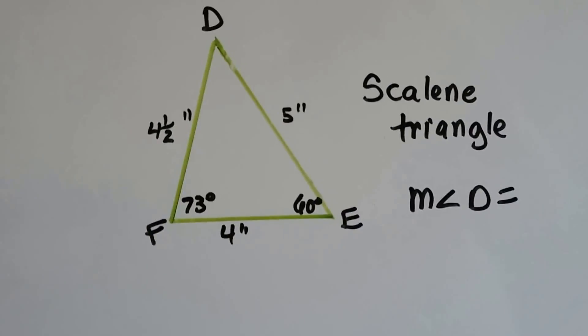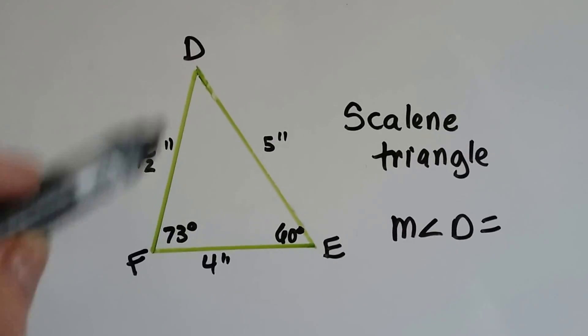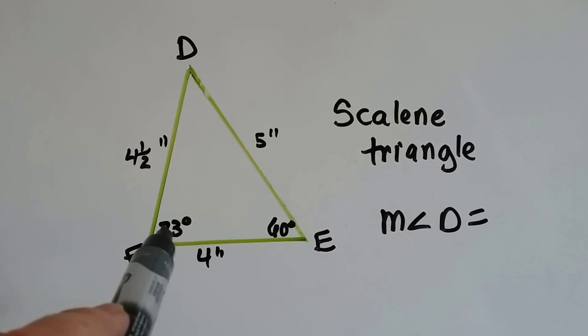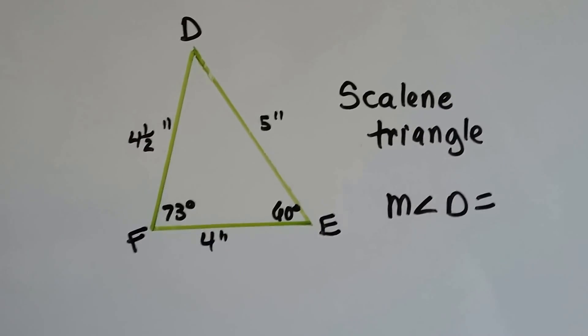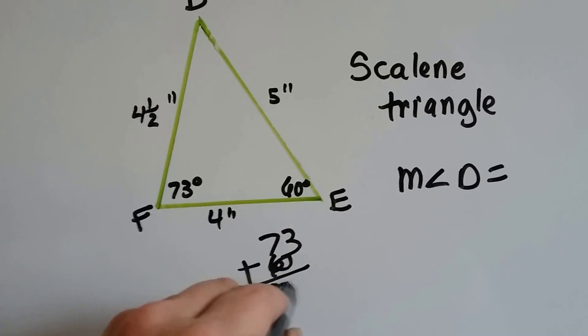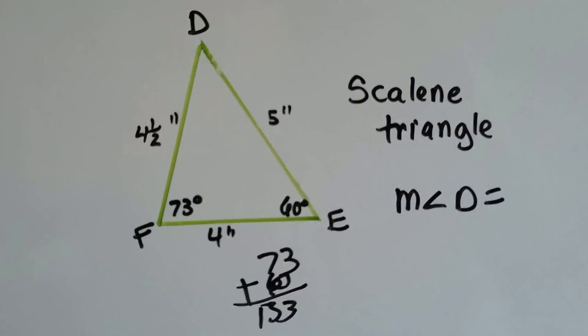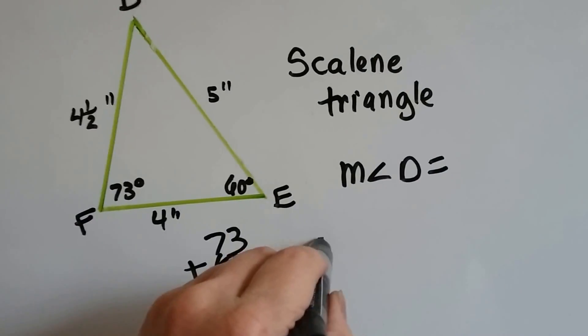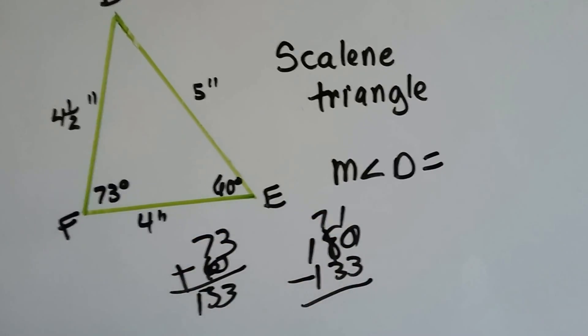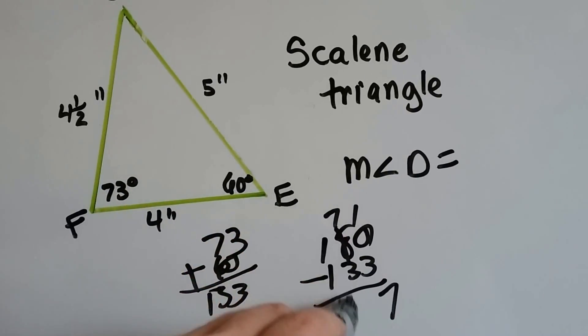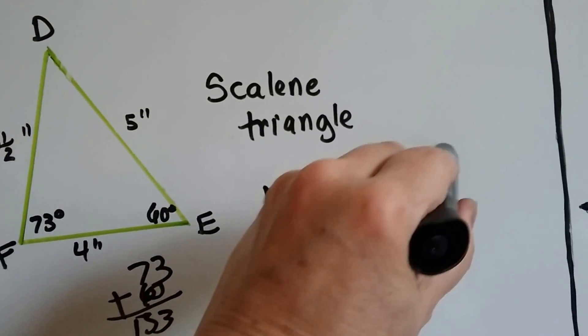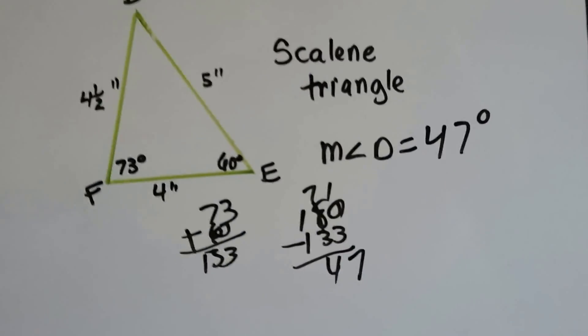All right. Here's a scalene triangle. This one's a 4 1⁄2 inch side. This is a 5 inch side and that's a 4 inch side. All three sides are different. It's got a 73 degree angle and a 60 degree angle. Let's add them up. 73 and 60 is 133. So what could the measure of angle D be? Well, 180 minus 133, that turns into a 7 and we got a 10. 10 take away 3 is 7. 7 take away 3 is 4. We know the measure of angle D is 47 degrees. Very easy to do, isn't it?